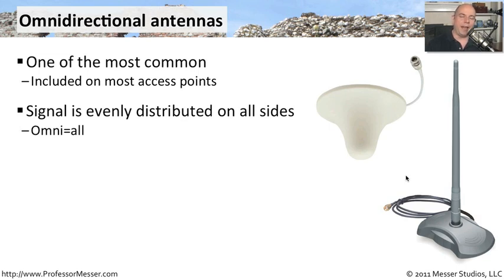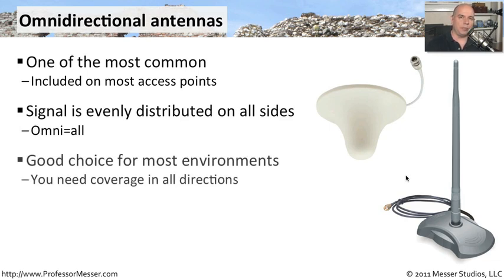So you put your access point in the middle, and all of the signal goes out into every direction. It's not at all focused on any particular area, and therefore it's very simple to set up. You put it in the middle of the floor, you turn it on, and now you don't have to worry about one side of the access point getting more signal than the other. Everybody's signal is going to be evenly distributed right around that antenna.